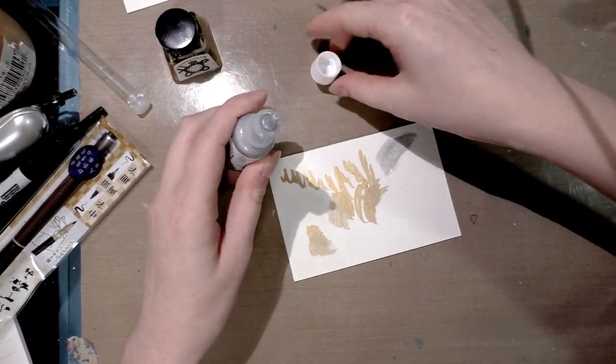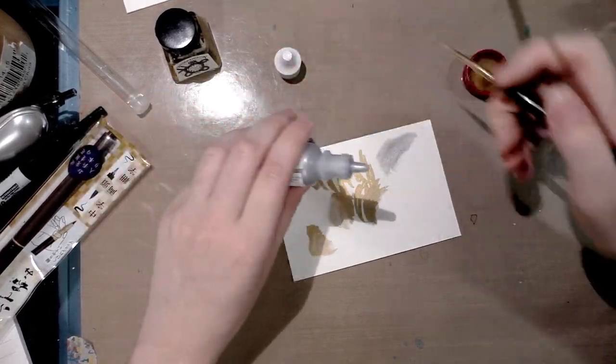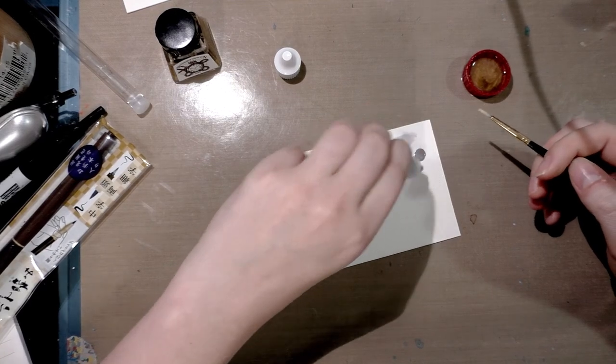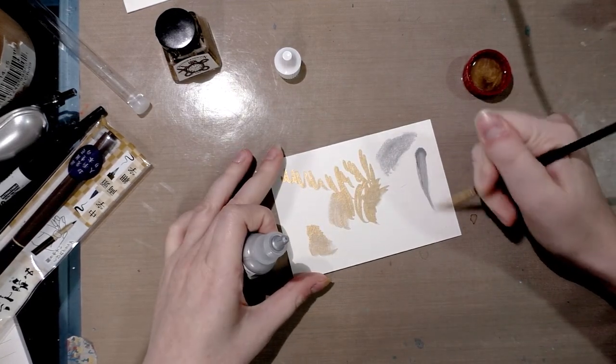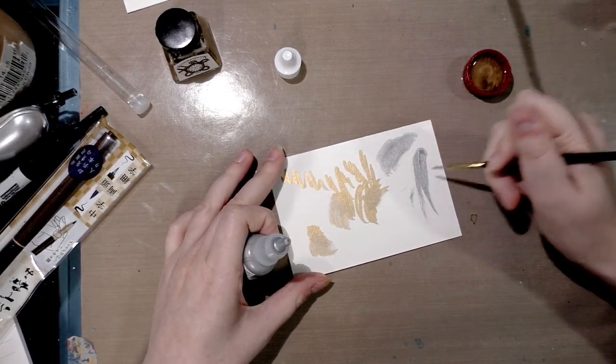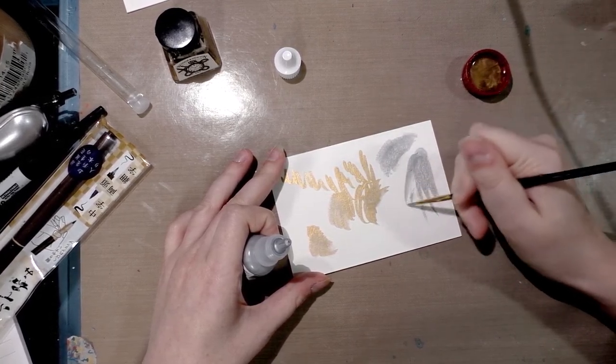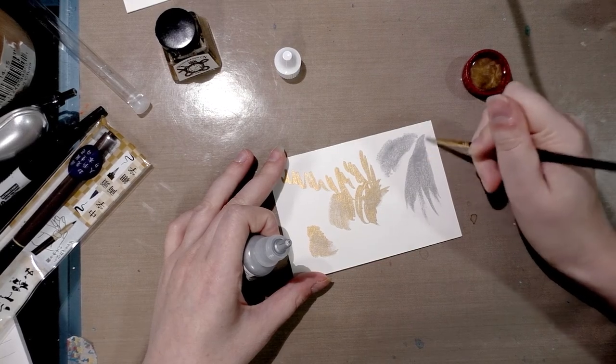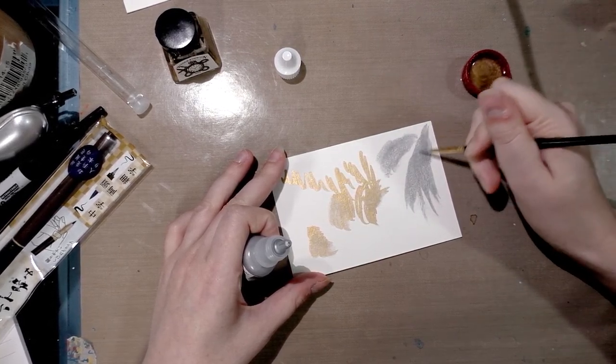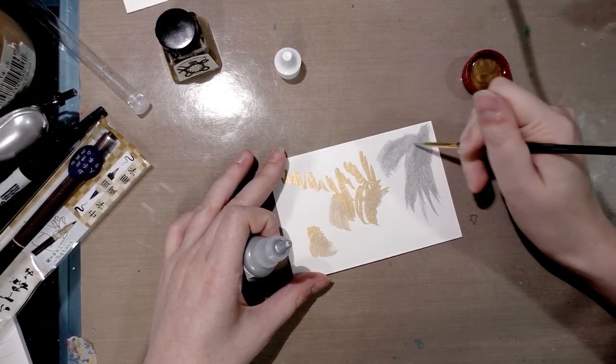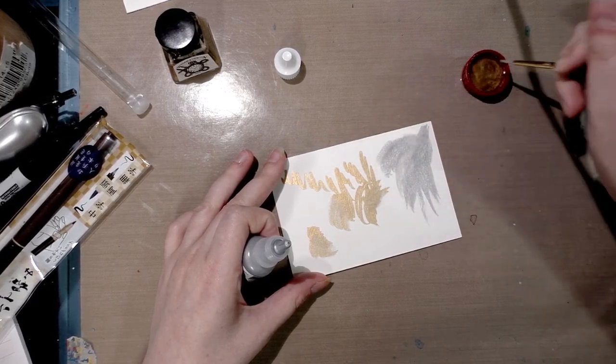We can use these alcohol inks to sort of paint with them as long as we work quick. And we can blend them with rubbing alcohol, which is cheap and easy to find and will make a little bit of ink go a long way.